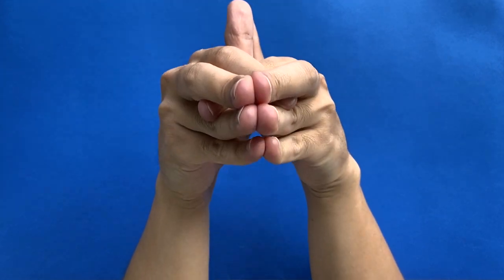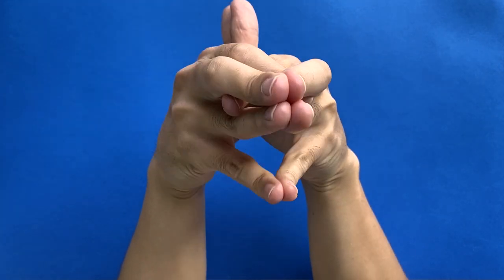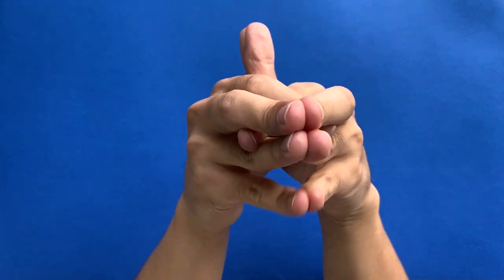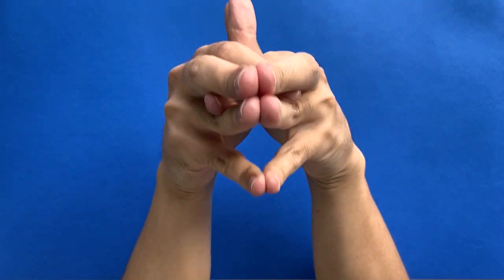Move your pinkies up and down to open and close the mouth. And voila! Chomp, chomp, you have now made your very own shark puppet with your hands.